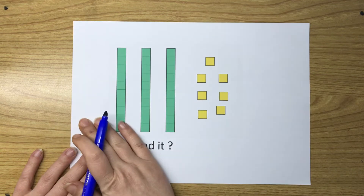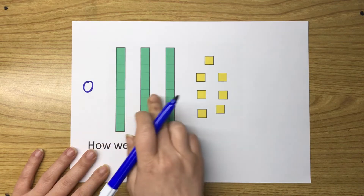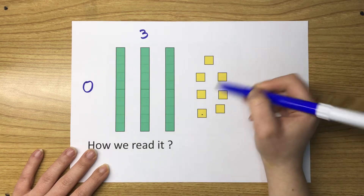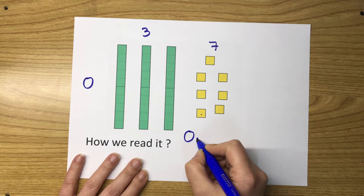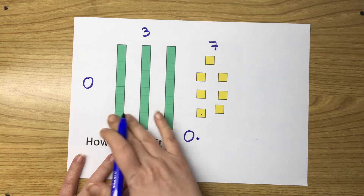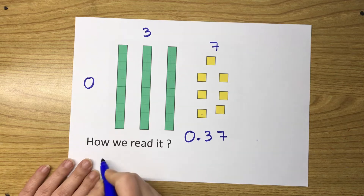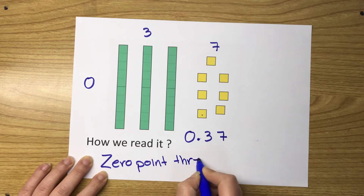Another number. How are we going to read this number? There are no big blocks, no wholes — zero wholes. How many tenths? There are three tenths. How many hundredths? There are four, and three more, so seven hundredths. So: zero for the ones digit, then a decimal point to separate the whole parts from the tenths and hundredths. There are three tenths and seven hundredths. We read it as zero point three seven.